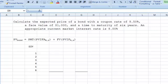Welcome back. In this session, we're going to explain how bonds work and how bond values are determined, and we've got a problem here to demonstrate the process. Calculate the expected price of a bond with a coupon rate of 8.5%, a face value of $1,000, and a time to maturity of 6 years.